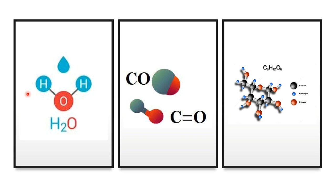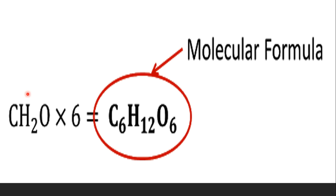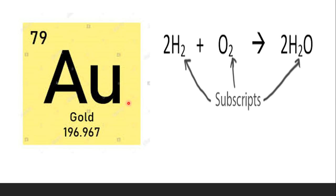Each molecule is made by adding different numbers of the same elements. Now, what is a molecular formula? A molecular formula is written to explain what's inside a molecule compound. For example, in glucose you can see there are six carbon atoms, twelve hydrogen atoms, and six oxygen atoms. The chemical symbol tells you the type of atoms, and the subscripts — the numbers below — tell you how many atoms of each element are in the compound. If a chemical symbol occurs more than once, just add the subscripts together.